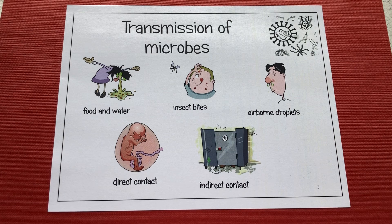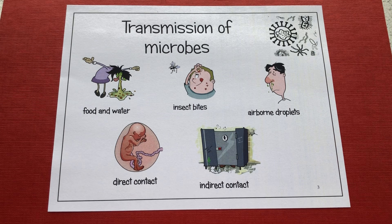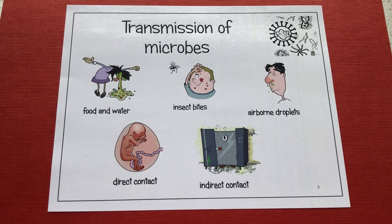We've got insect bites, such as the mosquito transferring malaria. Mosquitoes don't actually suffer from malaria, but they can transport it from one person to another. We've also got airborne droplets — this is our coughs and colds, and we know that coronavirus is transmitted by airborne droplets.